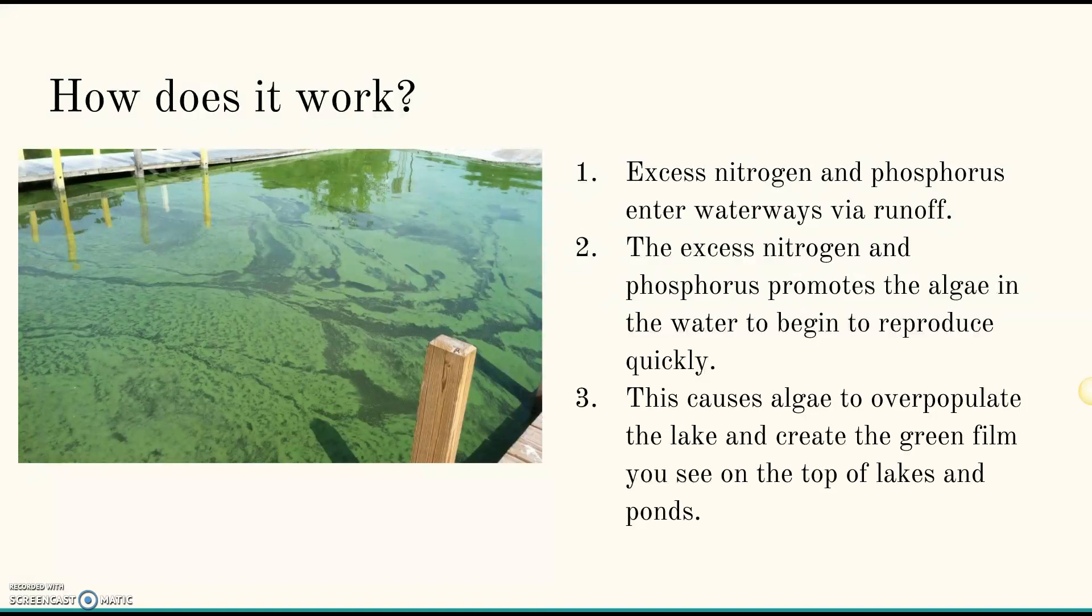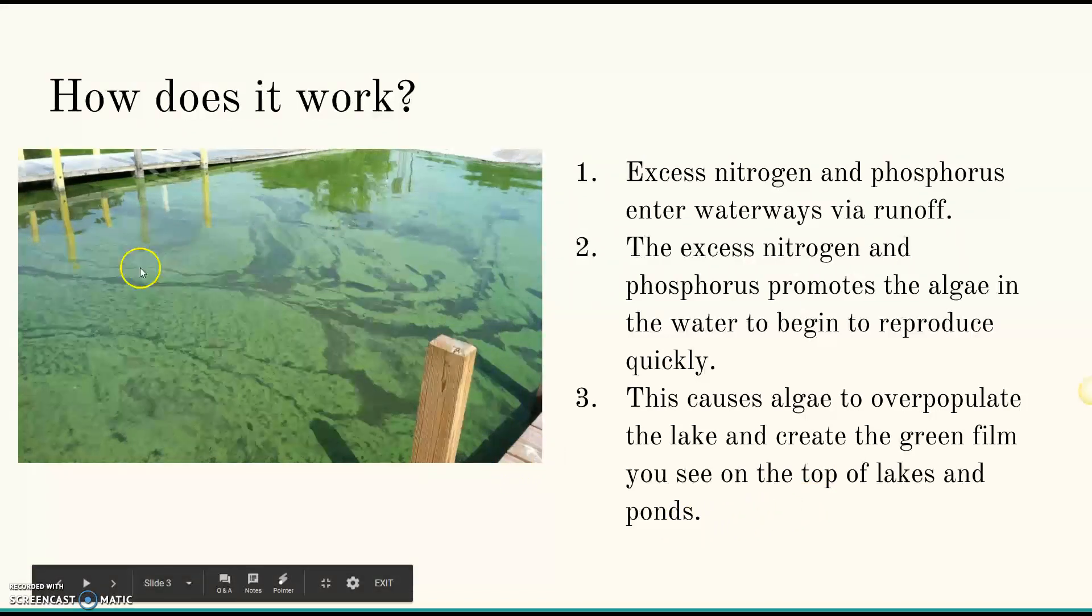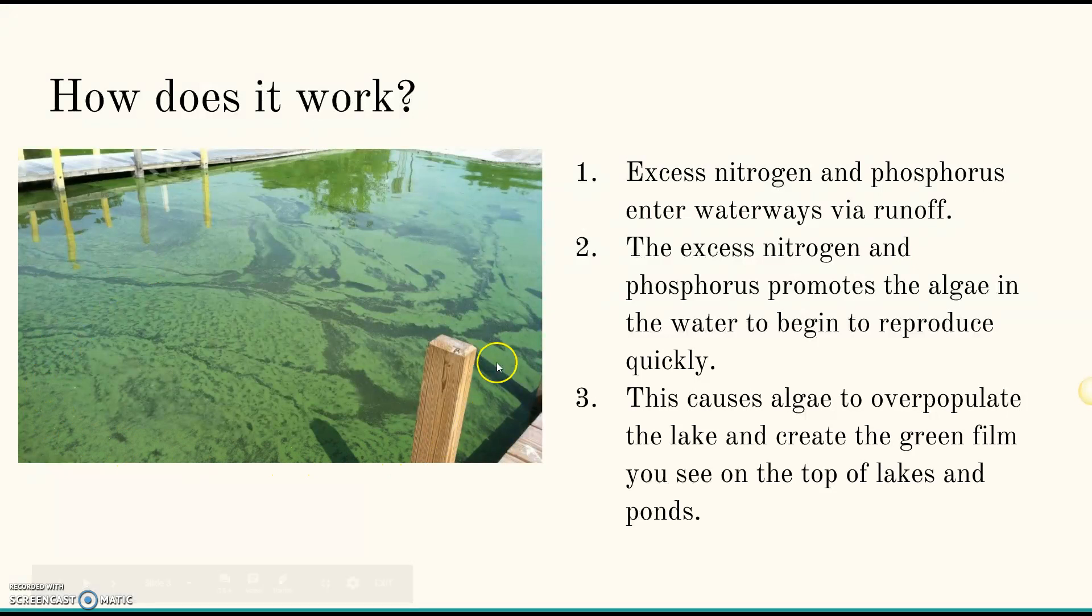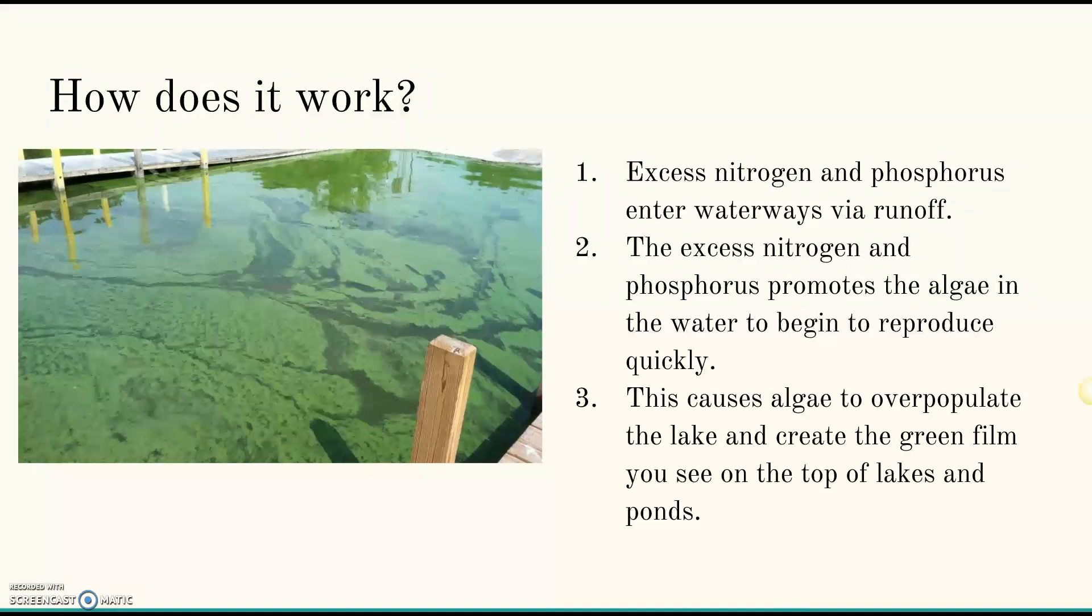When there's a lot of sunlight, these algae start to reproduce. Eventually you start getting this really kind of greasy green film that starts to appear over top of the water. What makes this worse is when the water sits still. This happens a lot in ponds and lakes where there's not a lot of water movement. So the water's kind of stagnant.